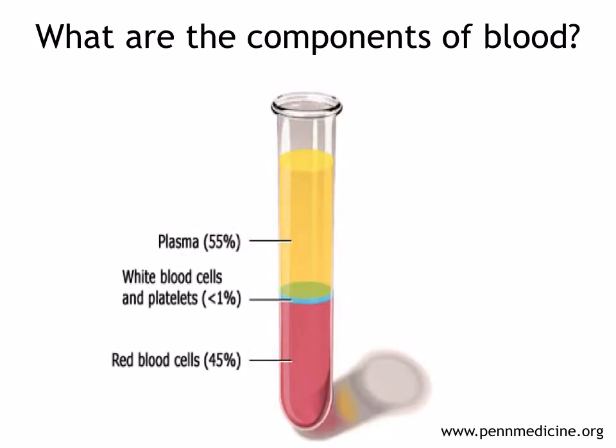So what are the different components of blood? If you spin your blood down in something called a centrifuge, it'll separate into different components. Have a look at this test tube — can you see what your blood is made mostly of? It's plasma. This is the liquid part of the blood and it's mostly made up of water. Then you've got red blood cells, which form about 45% of your blood. And the rest is white blood cells and platelets.